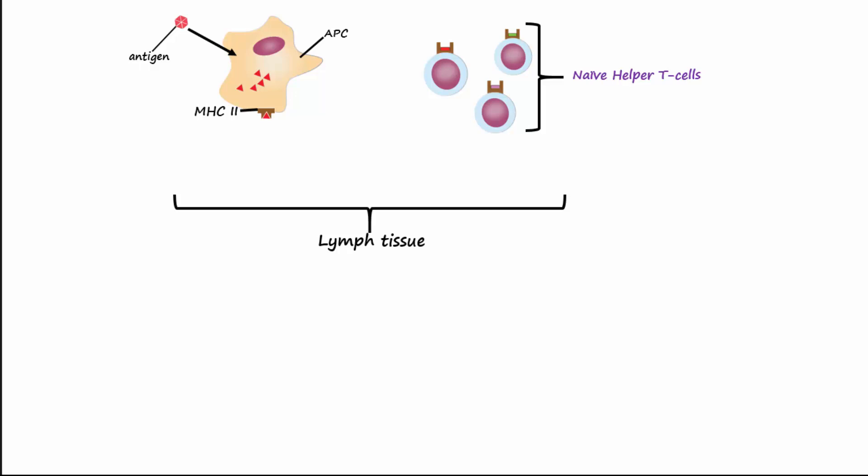One of the naive helper T cells will have a T cell receptor or TCR that will match the antigen expressed on the antigen presenting cell, and the two cells will bind together. Co-receptors play an important role to elicit a tight interaction between immune cells. CD4 is a co-receptor on the helper T cell that will bind to MHC class 2 molecules of antigen presenting cells.